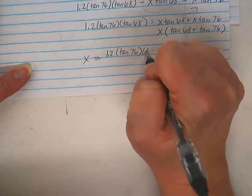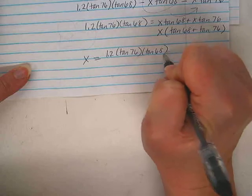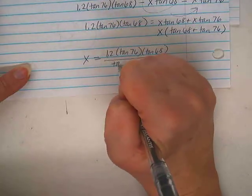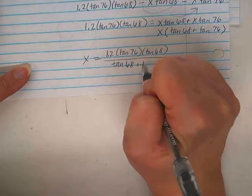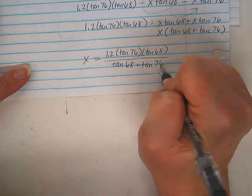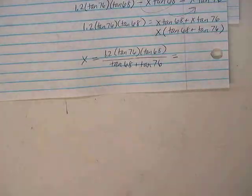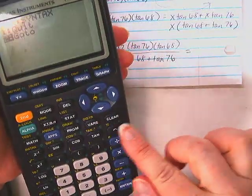So I'm going to divide to get the X by itself. I'm going to divide both sides by this thing. So I get 1.2 tangent 76 tangent 68 divided by tangent 68 plus tangent 76. Okay, calculator time. Do I have calculator time?